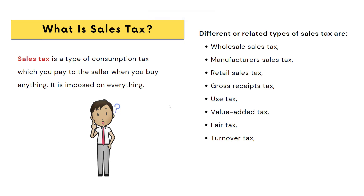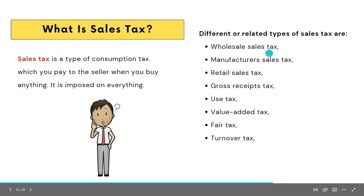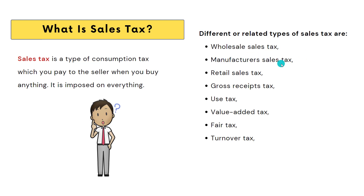Let us see what a sales tax is. Sales tax is actually a type of consumption tax which you pay to the seller when you buy anything. If you're buying a product from a seller, you have to pay some tax — that is the sales tax. There are different taxes like wholesale tax, manufacturer tax, retail sales tax, gross receipts tax, use tax, value-added tax, pay tax, turnover tax, and many others.